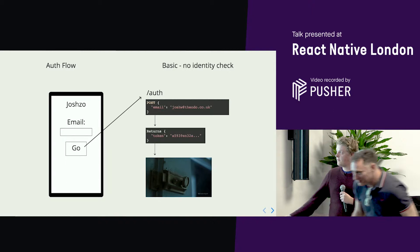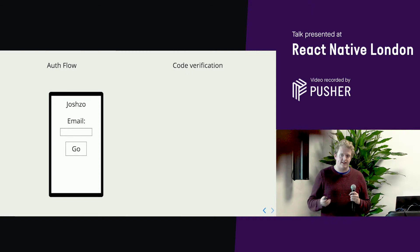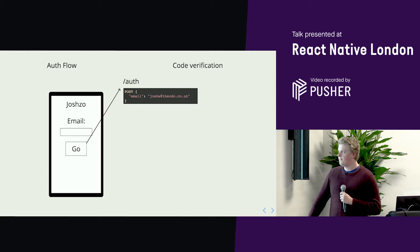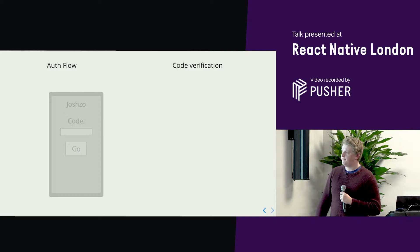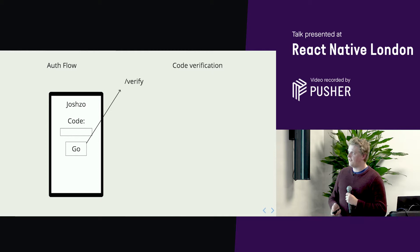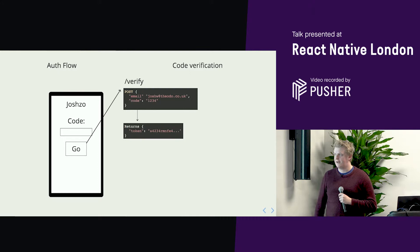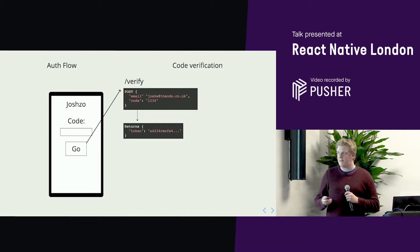The second one is a code verification system, quite similar to a text message flow. You hit slash auth, you post your email, and this time you just get an OK. In the background, it sends you an email with an automatically generated code which corresponds to your email. You type it in, then hit the slash verify endpoint where you pass your email and your code, and this time you get your token. So it's a bit more secure — you know the user has to have access to that email address.